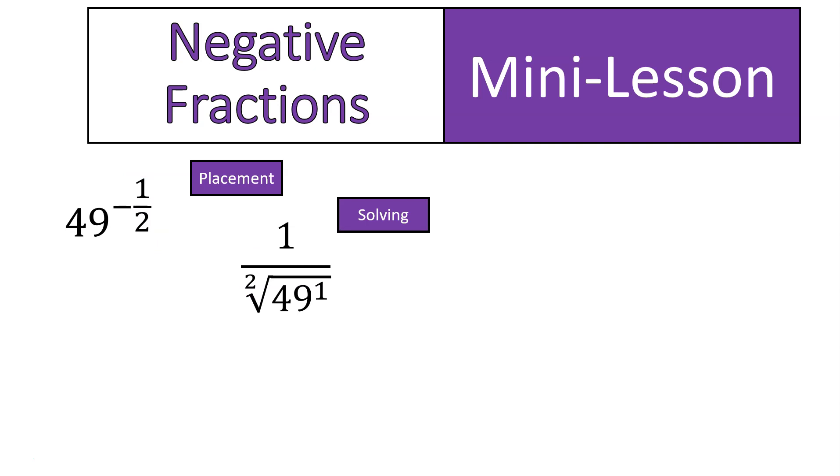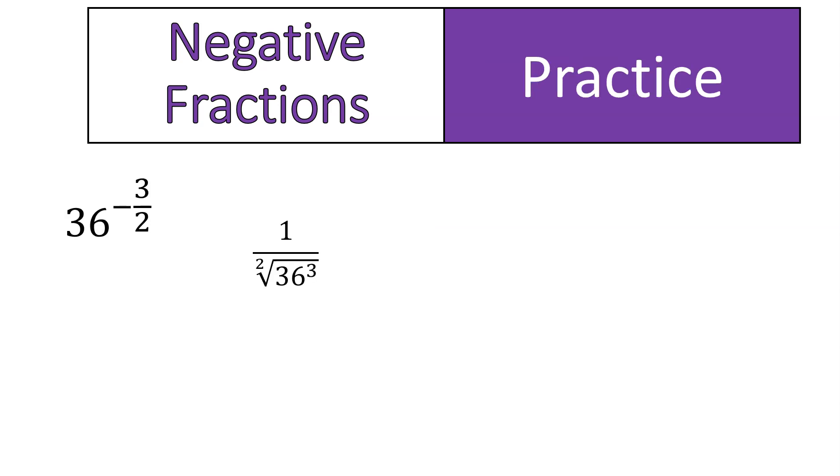So now we need to solve. And again, you can solve this in one of two ways, but I'm just going to simplify. Notice 49 to the power of 1 can be 49. And that square root with the 2, we can just get rid of the 2. So just to make our lives easier, I go from this to this. And then it's just saying 1 over the square root of 49. Well, the square root of 49 is 7. So my solution is 1 over 7. And that's it. There's not really two different ways to solve this one, like in our previous examples, because we do have that 1 in the numerator of our exponent. So that kind of makes it a little more straightforward.